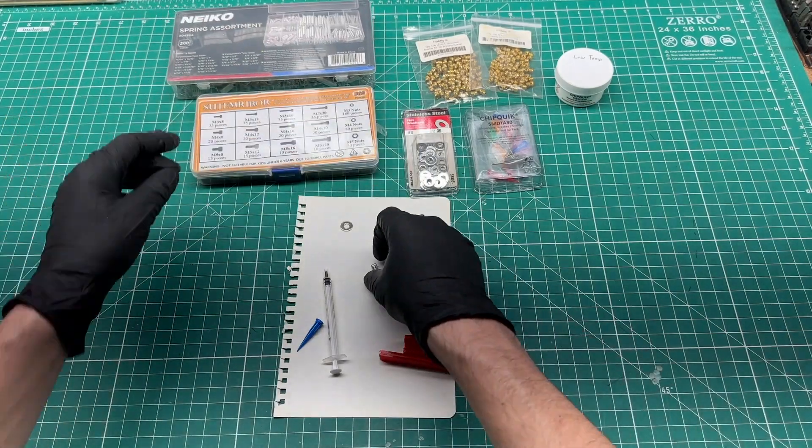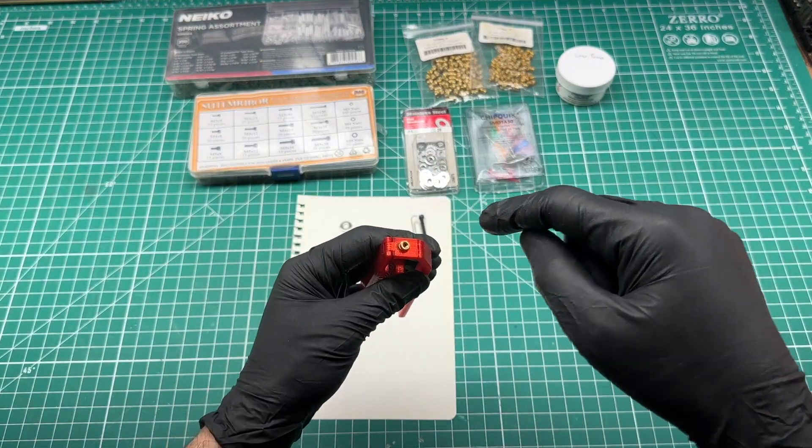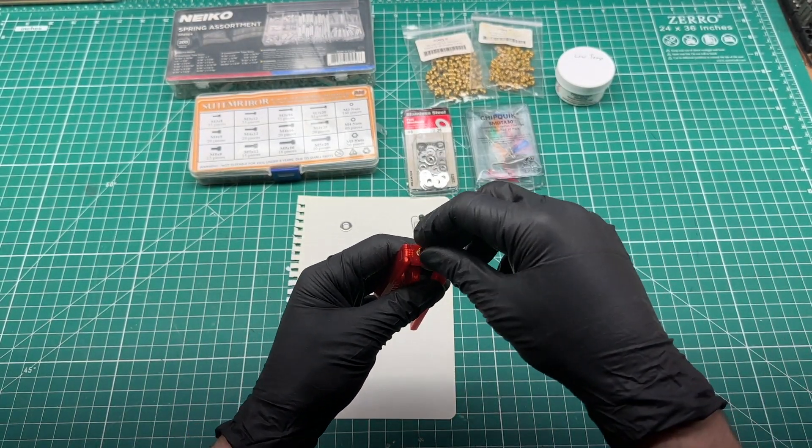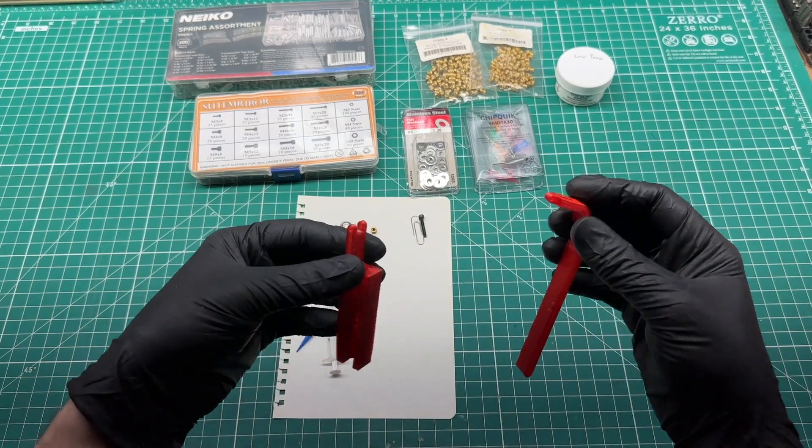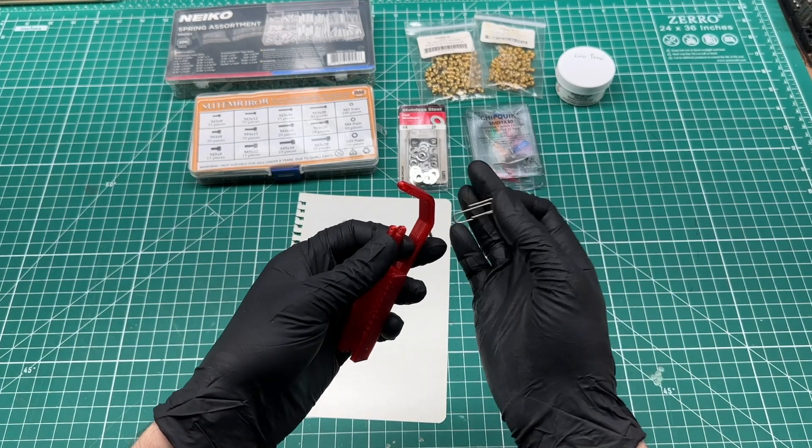The top of the dispenser requires melting in a heat set insert to provide sturdy threads for an adjustment screw that pushes on the syringe plunger. The frame and handle need to be connected with a small pin. This model was designed to use a piece of a paper clip for the pin. Kind of cool.